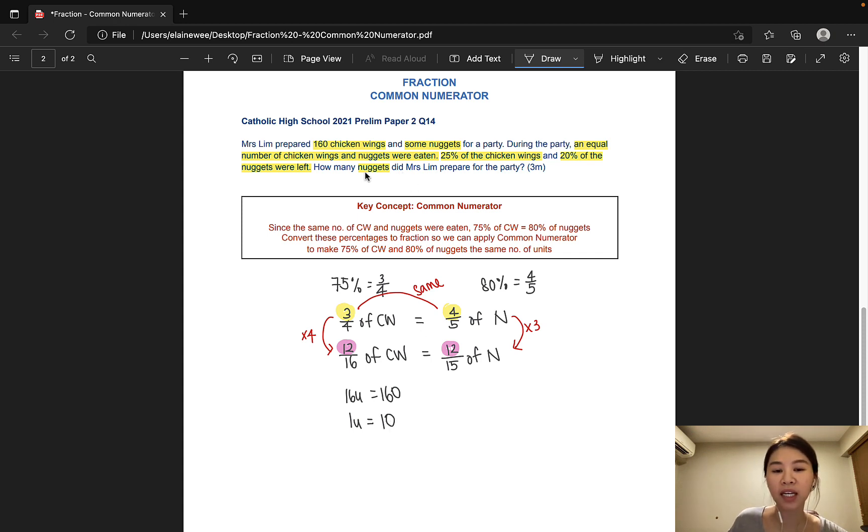The question is asking for the number of nuggets Mrs. Lim prepared for the party. Now, the original number of nuggets is 15 units. So, 15 times 10 would give us 150. And that's it. That's our answer to this question.